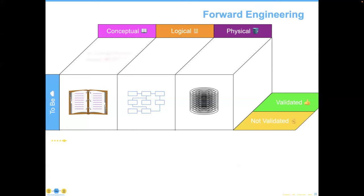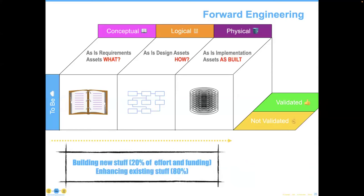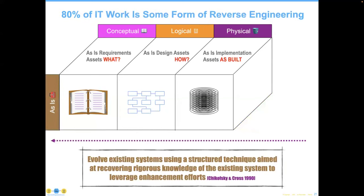Forward engineering is what we teach students in university — how to build new stuff. Unfortunately, only 20 percent of IT efforts are spent building new things, while enhancing existing systems occupies 80 percent of the time, for which students typically receive zero experience. So 80 percent of IT work is some form of reverse engineering — evolving existing systems using a structured technique aimed at recovering rigorous knowledge of the existing system to leverage enhancement efforts, going from our physical as-is to our logical as-is, and perhaps to our conceptual model.